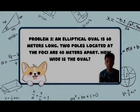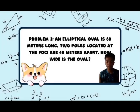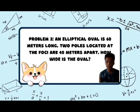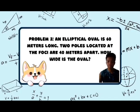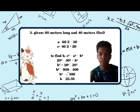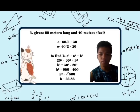Problem 3: An elliptical oval is 60 meters long. Two poles located at the foci are 40 meters apart. How wide is the oval? The givens are: 60 meters long (so a = 30) and the foci are 40 meters apart (so c = 20). To find B, we use the formula c² = a² - b²: so 20² = 30² - b².